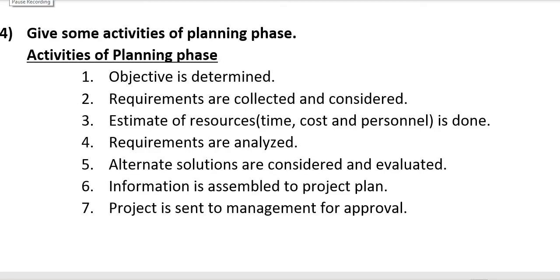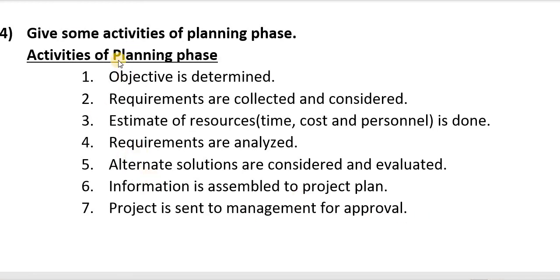Question four: Give some activities of the planning phase. The activities of the planning phase are: 1. Objective is determined. 2. Requirements are collected and considered. 3. Estimate of resources — time, cost and personnel — is done. 4. Requirements are analyzed. 5. Alternate solutions are considered and evaluated. 6. Information is assembled into a project plan. 7. Project is sent to management for approval. Write all these activities in sequence. Take a screenshot.